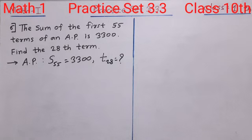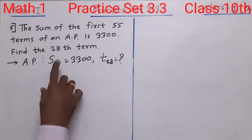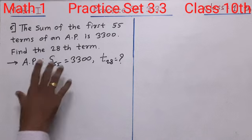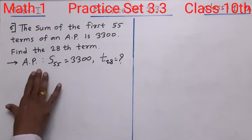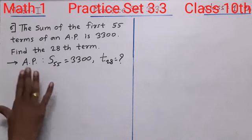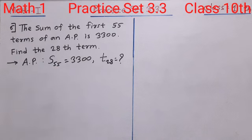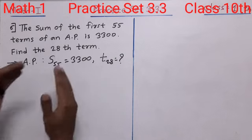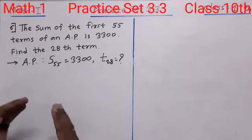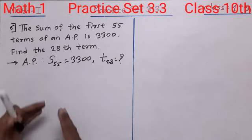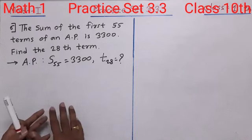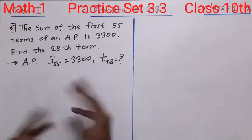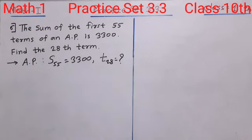Since we have been given S55, we are first going to use the formula for SN. Whatever information we get from that formula, we will use it in the formula for TN to find T28.